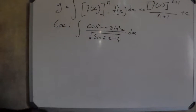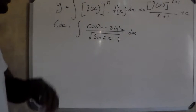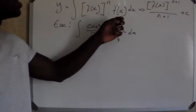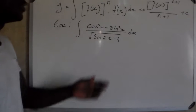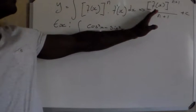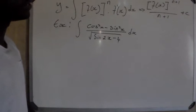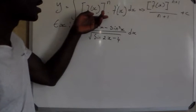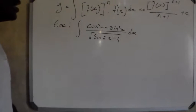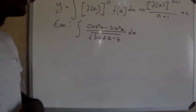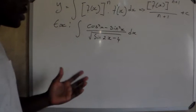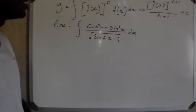Today we're going to look at another type of integration, which is the integral of f of x to the power n multiplied by the derivative of f of x. The form is equal to f of x to the power n plus one, divided by n plus one. Other guys were complaining that I'm doing simple examples, so I chose this equation which is more complex, but it follows the same principle.